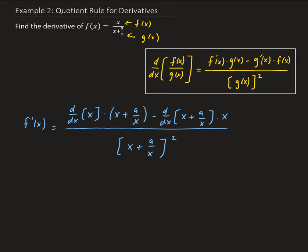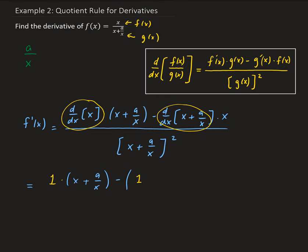Now we can go ahead and take the derivatives of those components. The derivative of x gives us 1, times x plus a over x. Then for the derivative of x plus a over x, we split that up: the derivative of x is 1, and for a over x, which is the same as a times x to the negative 1, the derivative gives us minus a x to the negative 2, which is minus a over x squared. Then times x.